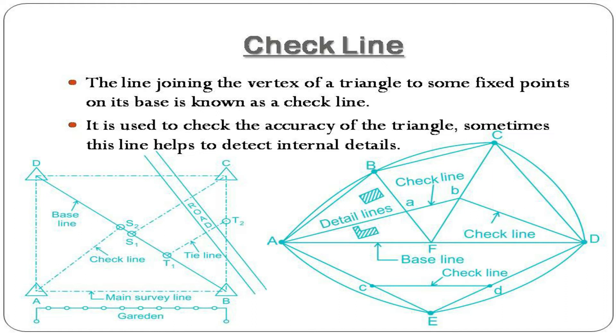Check line: The line joining the vertex of a triangle to some fixed point on its base is known as a check line. It is used to check the accuracy of the triangle. Sometimes this line helps to detect internal details.